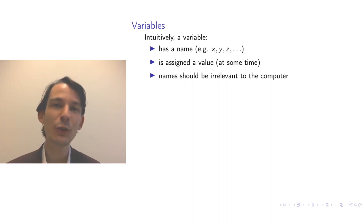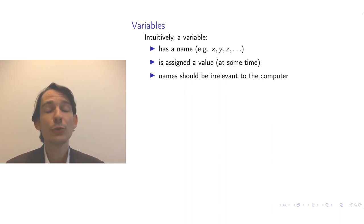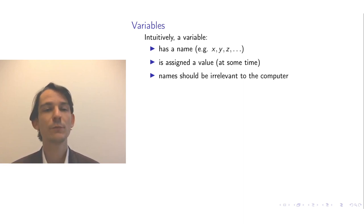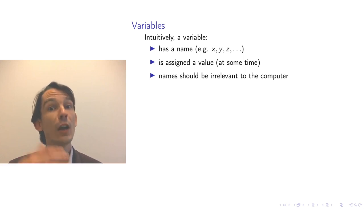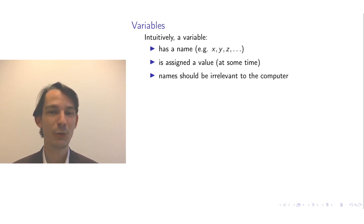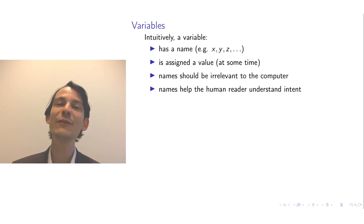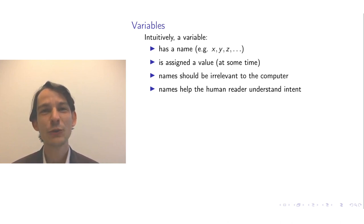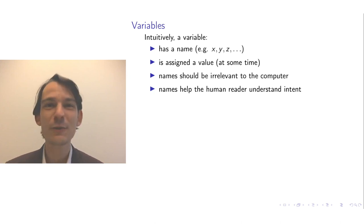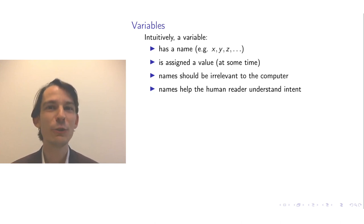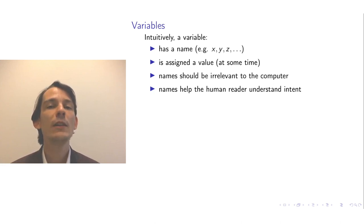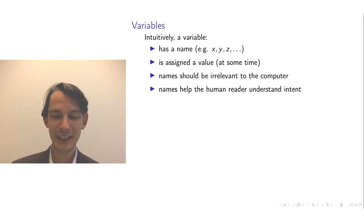You can also think of the names of the variables as completely irrelevant to the computer. The computer is mindless — it just executes step by step and doesn't really care about what the name of a variable is. But the purpose of giving a name to a variable is to help the human reader understand the intent. If you cleverly give variables a name, then months later, if you see the program again, you can guess from the names the purpose and intent that these variables have.